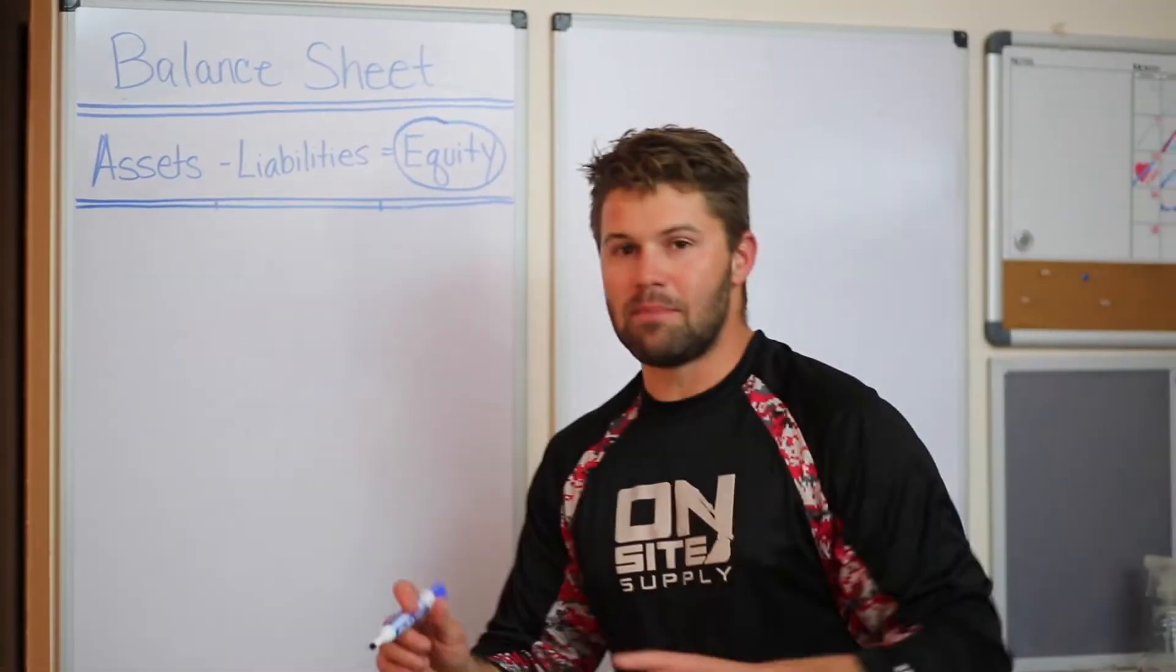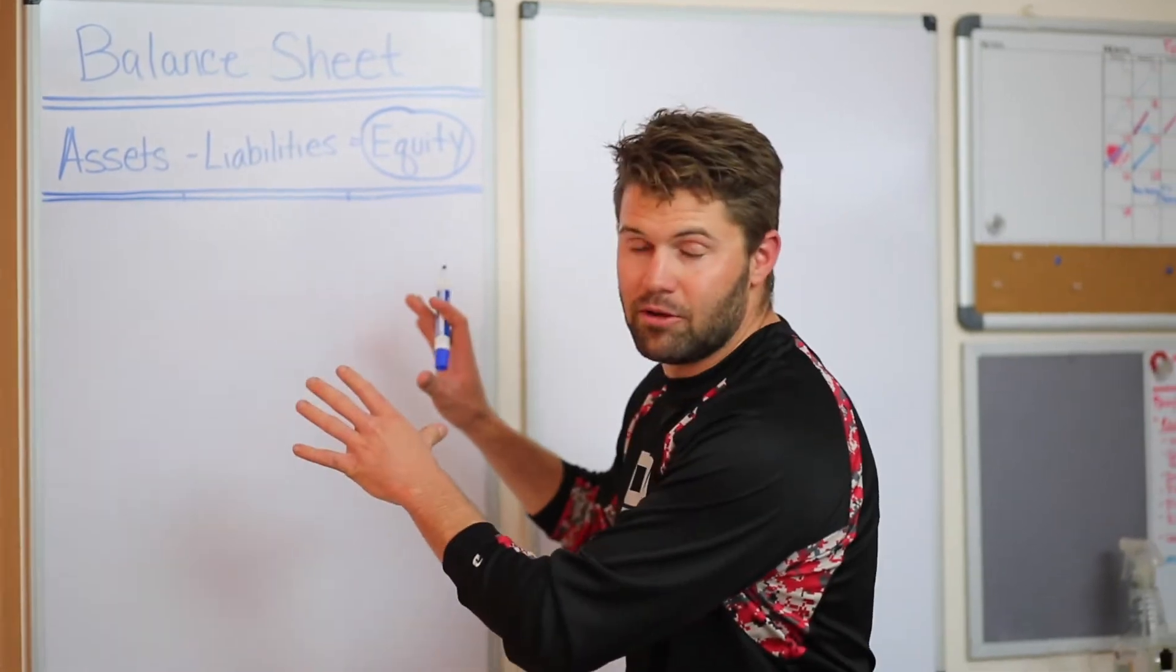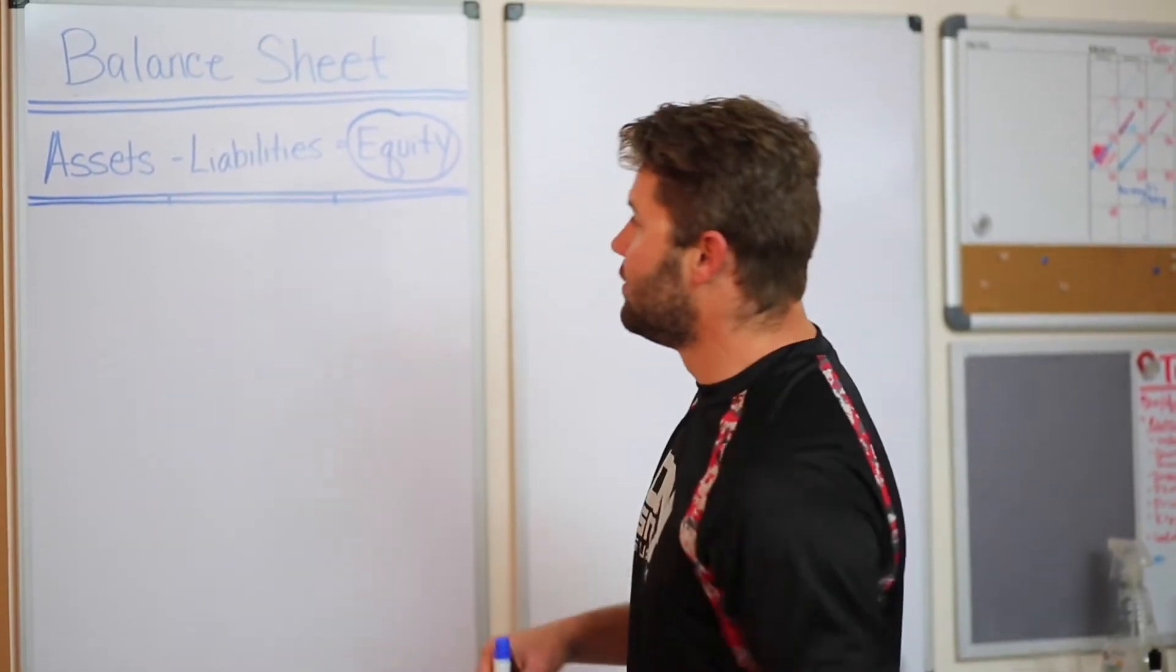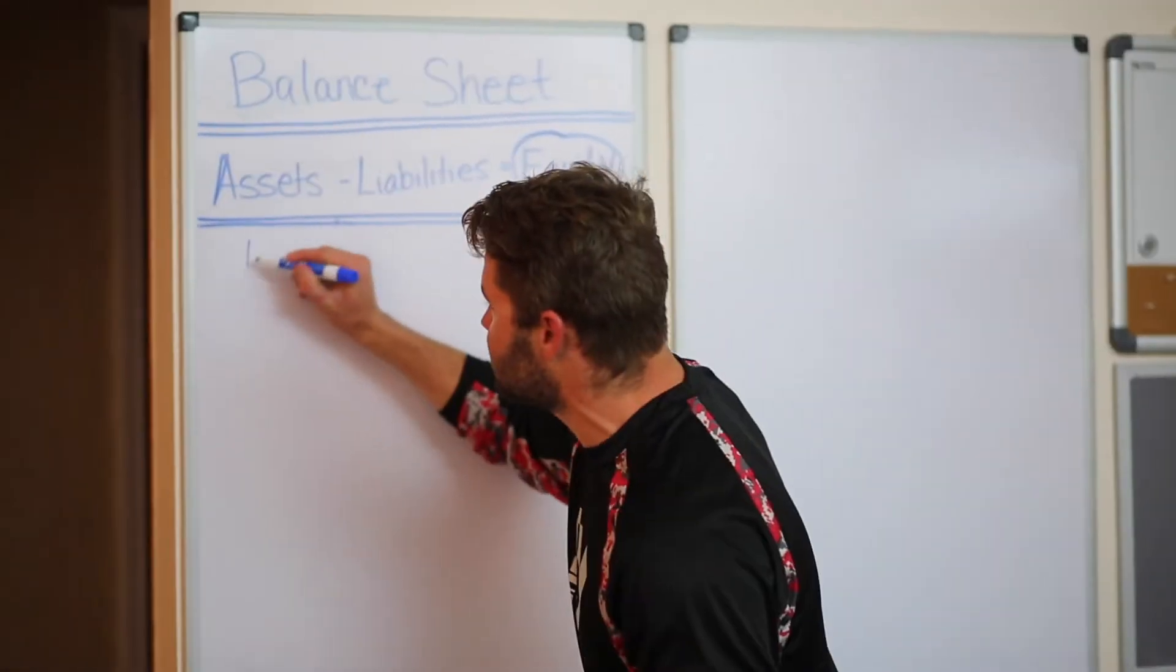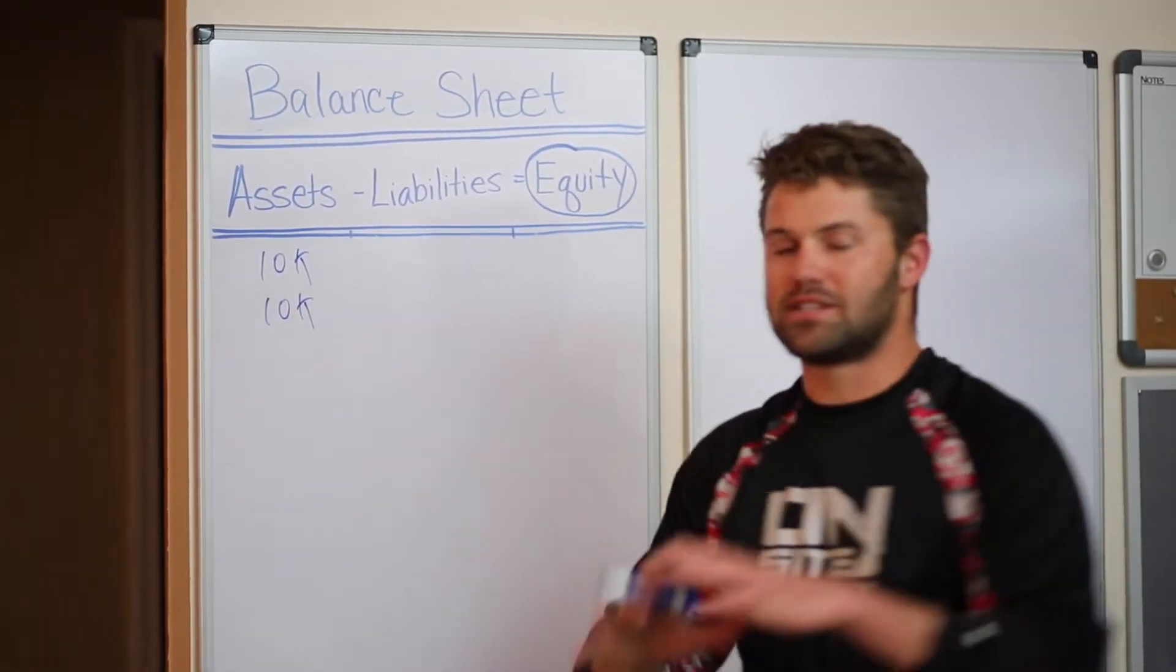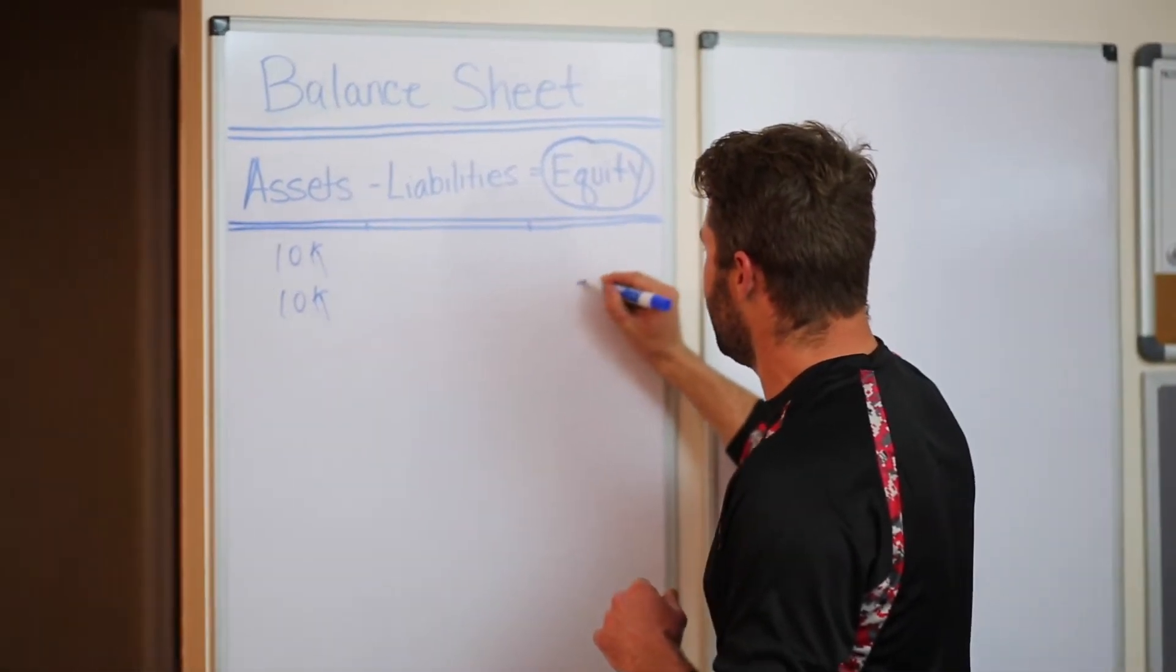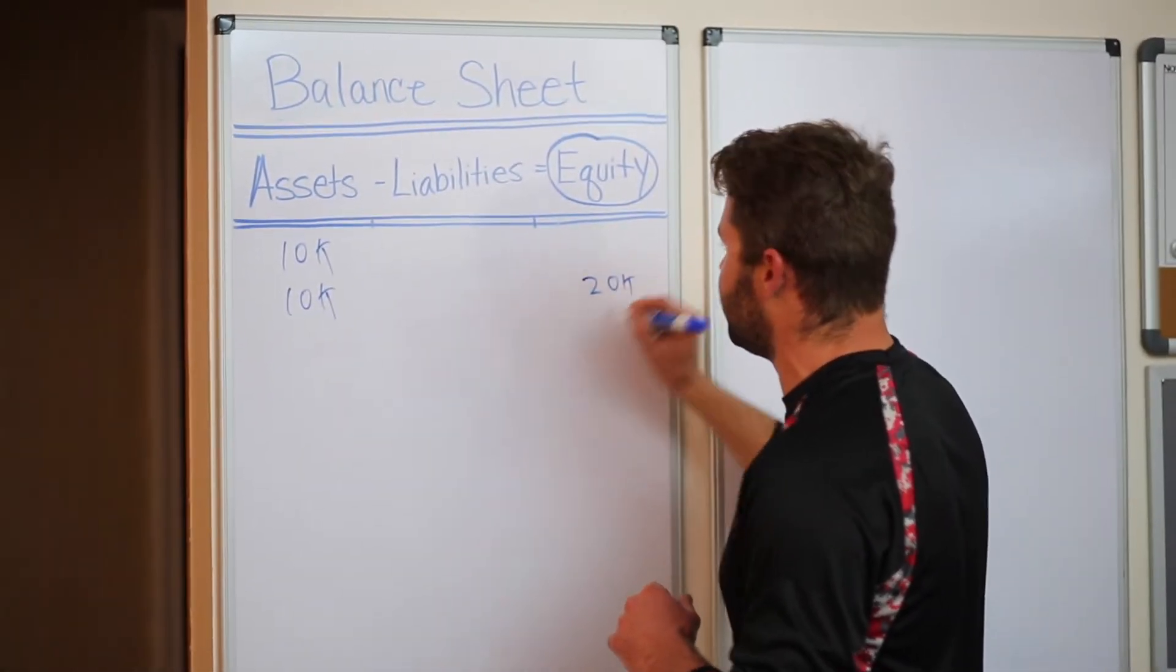In the example of the leverage buyout, just to have an example of a balance sheet, an individual is asking 10k for his customers and 10k for his goodwill. So he's asking $20,000 for the value of the business. Over here we've got $20,000 value of the business.